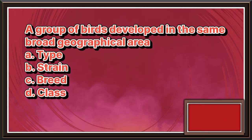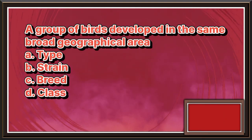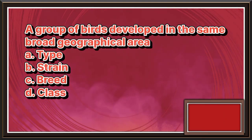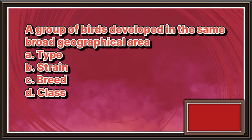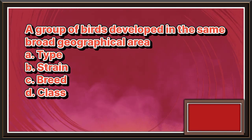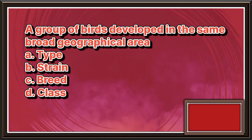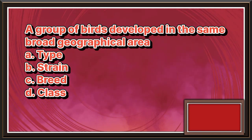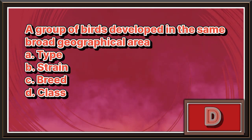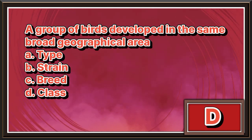A group of birds developed in the same broad geographical area. A. Type. B. Strain. C. Breed. D. Class. The answer is letter D.